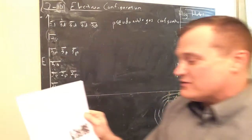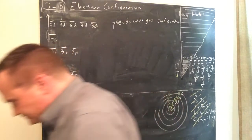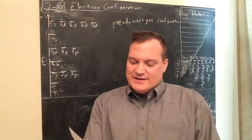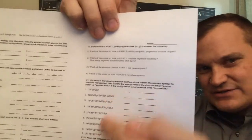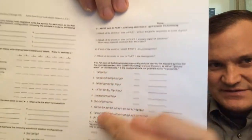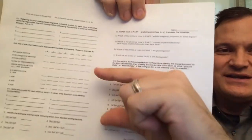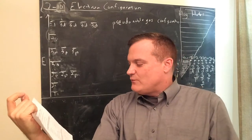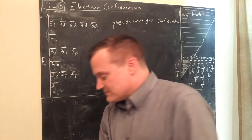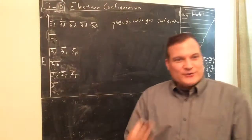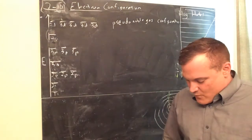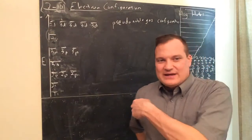Now let's talk about ground state and excited state. The middle part of the worksheet has some exercises to make sure you really understand electron configuration. You'll identify which element is shown and whether it's in the ground state, excited state, or an impossible configuration. We're going backwards through the worksheet, and I'll do the middle part last.